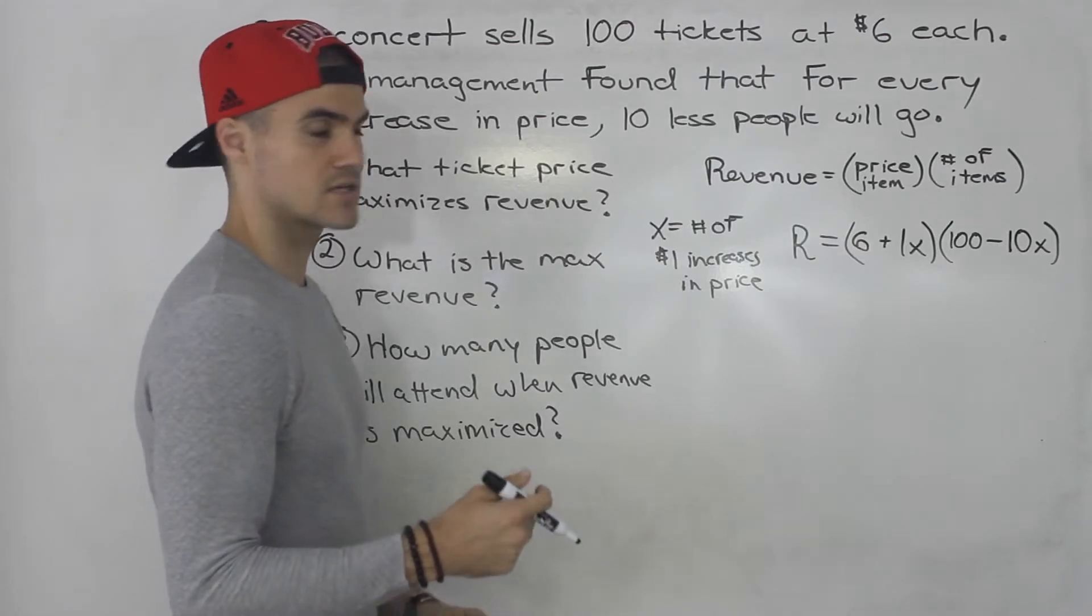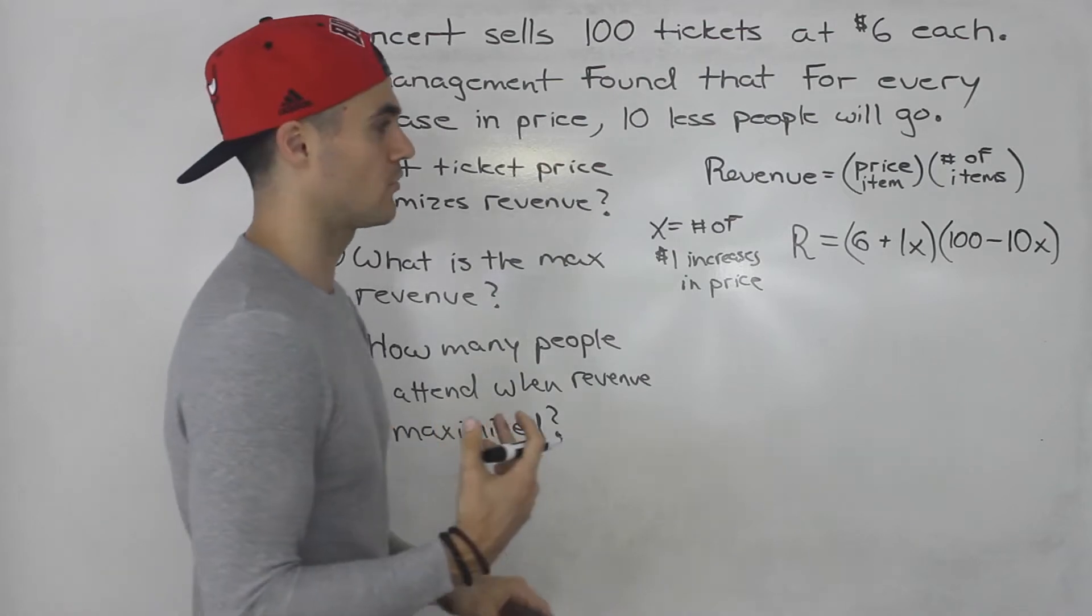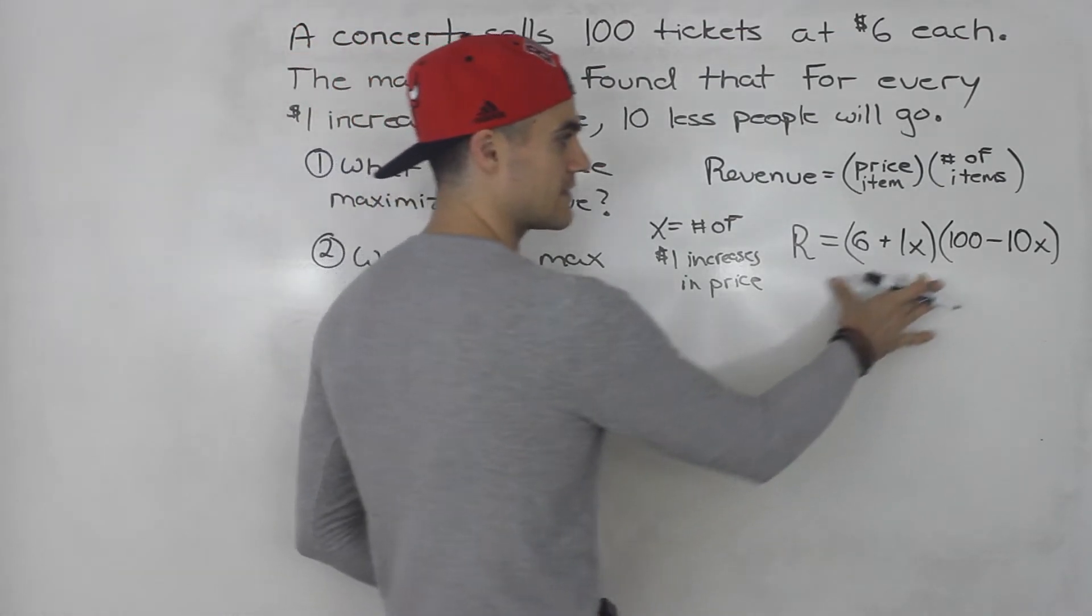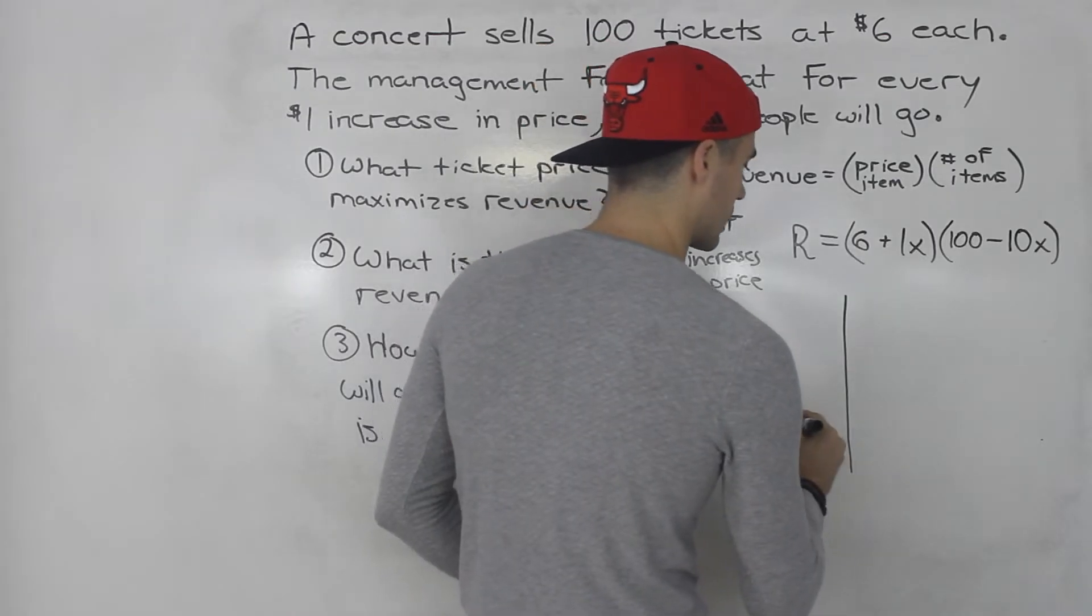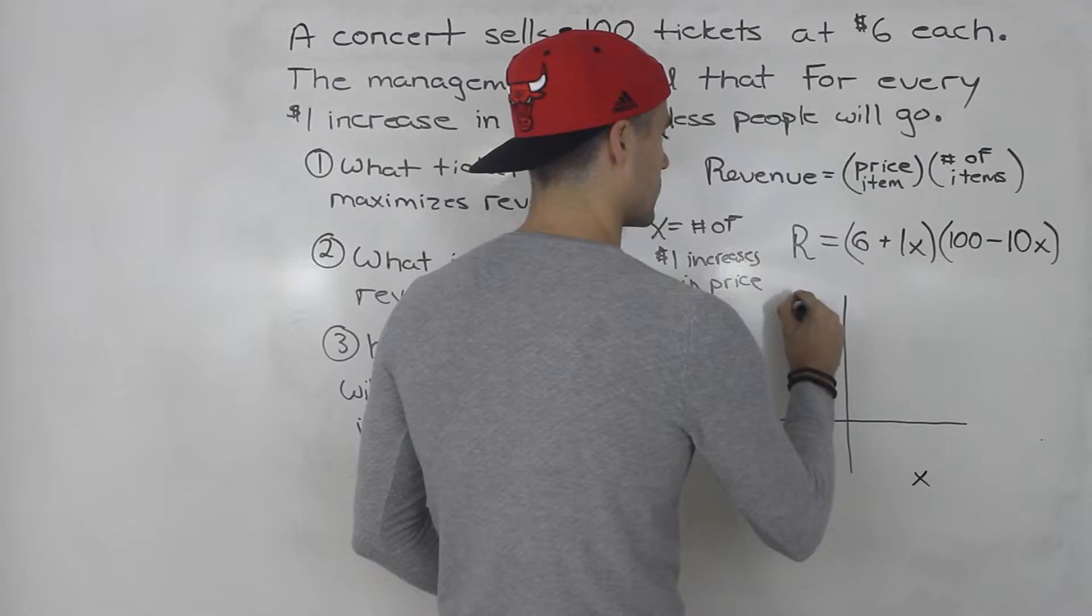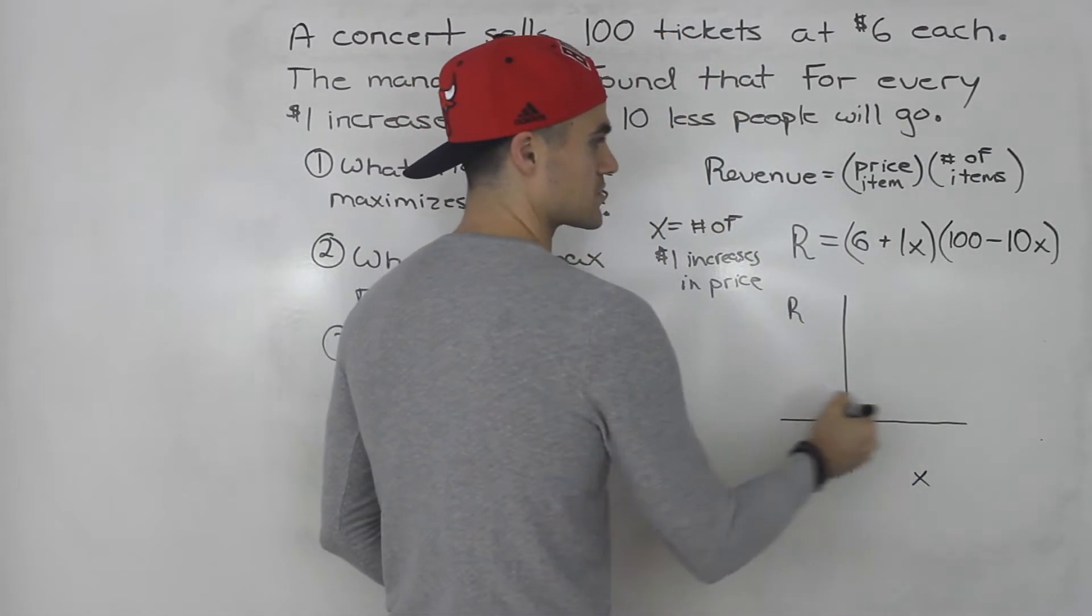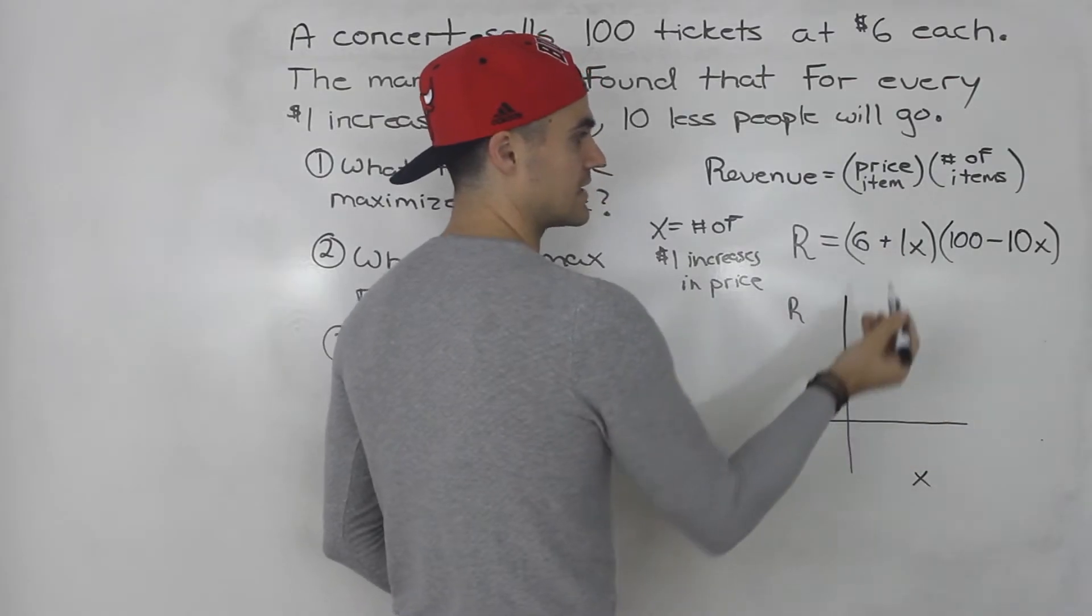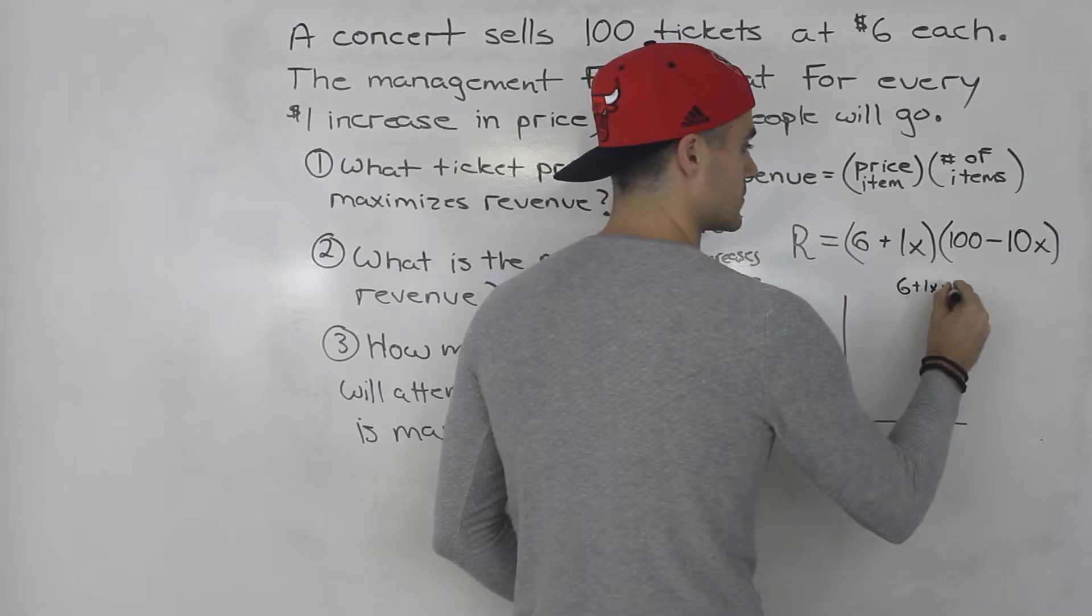There's multiple ways to do this. You can expand everything, complete the square. We're actually going to do it both ways. But notice that this is already factored for you. We can find out what the intercepts are pretty easily. We could just let each bracket equal 0. So 6 plus 1x equals 0, that's going to happen at x equals negative 6.